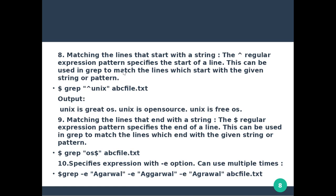The next method is caret (^), which is the regular expression pattern for the start of a line. This can be used with grep to match lines which start with the given string or pattern. So using grep with caret unix on abc file, it will print the line where unix is at the start — that is the first line, 'unix is great.' Then the dollar sign ($) is the end of the line — it matches a pattern at the end of a line.